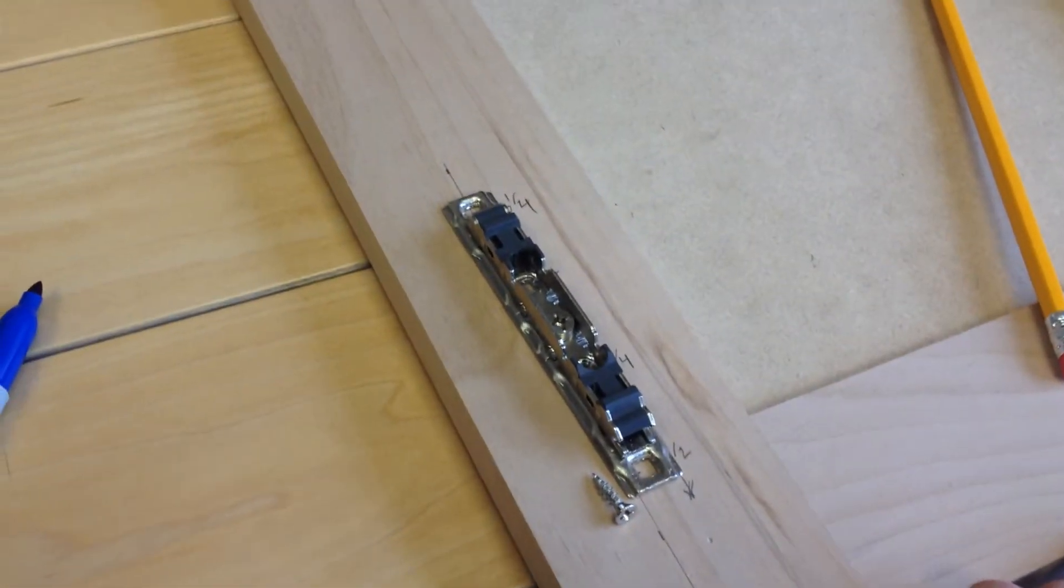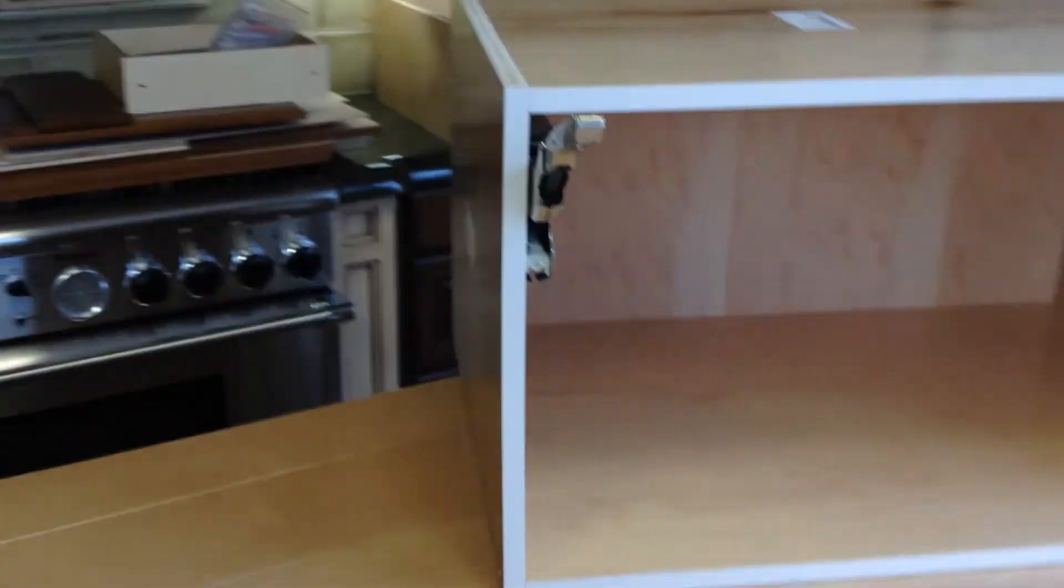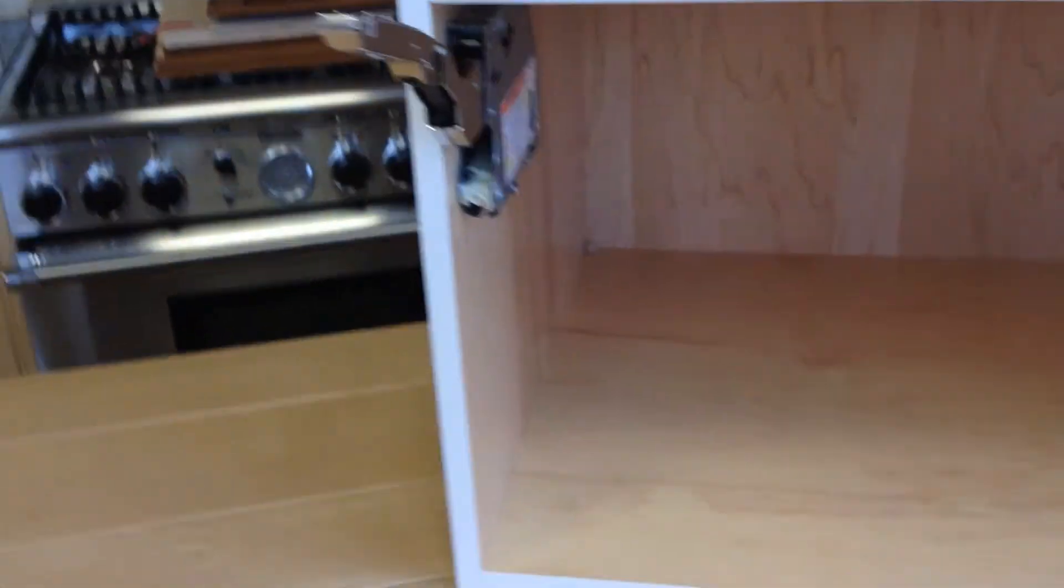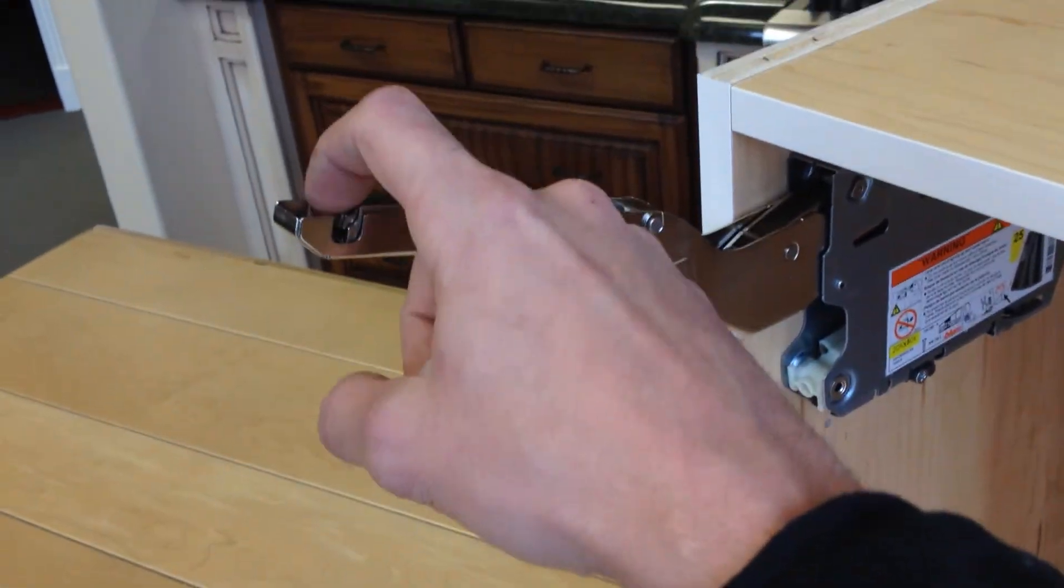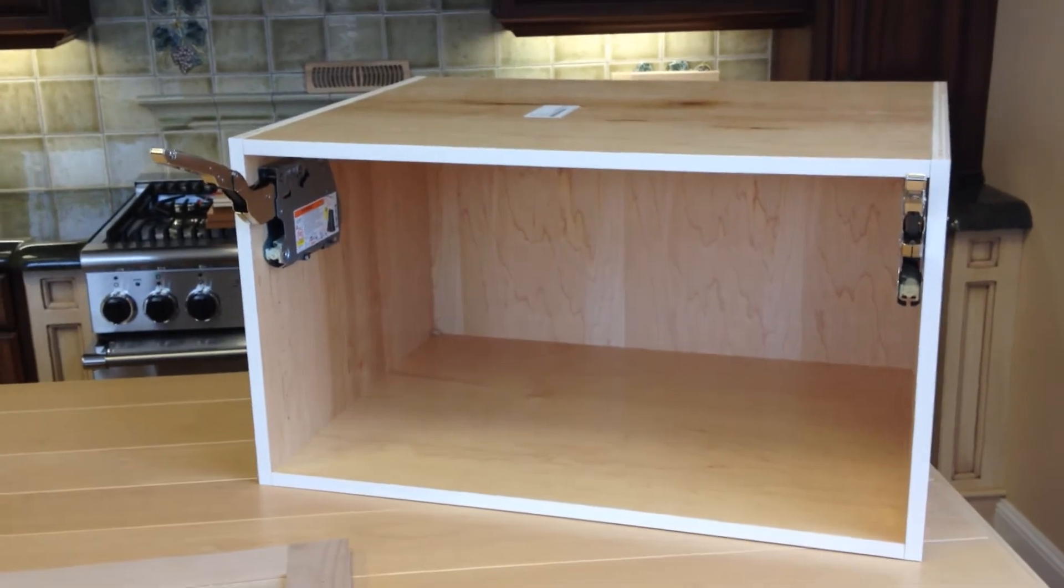And then it'll look similar to this. And that's pretty much it. So then all you've got to do, once this hinge plate's attached, you can just go over and you can actually click it. It'll actually click right onto this bracket right here. And then you've got yourself a wall flip-up door cabinet. Very simple. That's pretty much it.